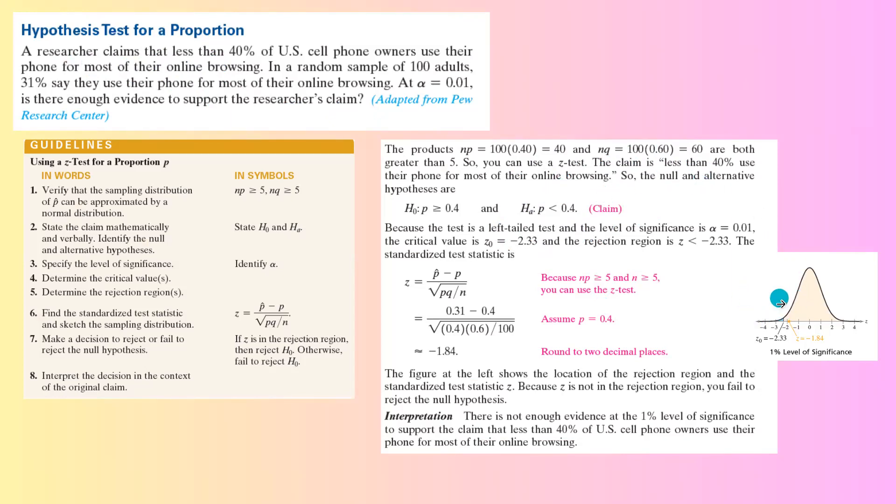Because of that, you have a left-tail test. You can easily build the null, which is the opposite. So it says the population proportion is more than or equals to 40%.